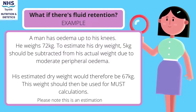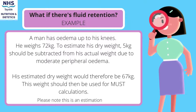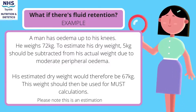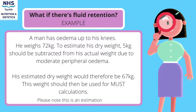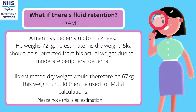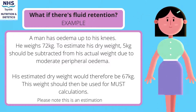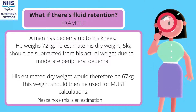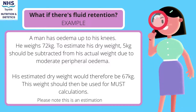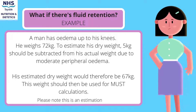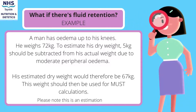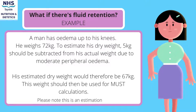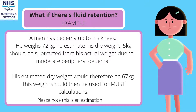Here is an example of working out fluid retention. A patient has oedema up to his knees and weighs 72 kilograms. To estimate his dry weight, 5 kilograms should be subtracted from his actual weight due to moderate peripheral oedema. His estimated dry weight would therefore be 67 kilograms, and this weight should then be used to calculate MUST.